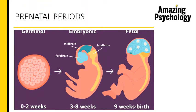You can see the three different prenatal periods here. The first, between zero and two weeks, is called the germinal period or the period of the zygote. The second exists between three and eight weeks and is called the embryonic period or the period of the embryo. The third is between nine weeks and birth and is called the period of the fetus or the fetal period.